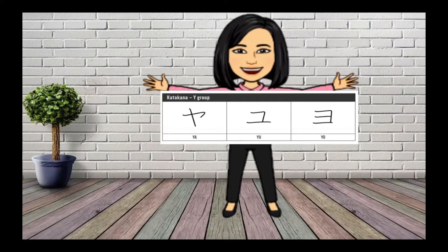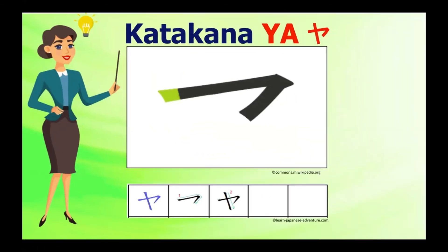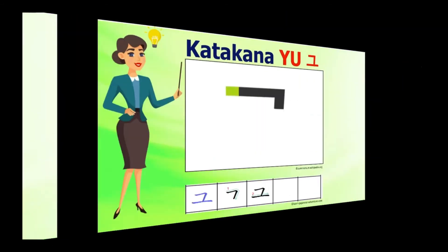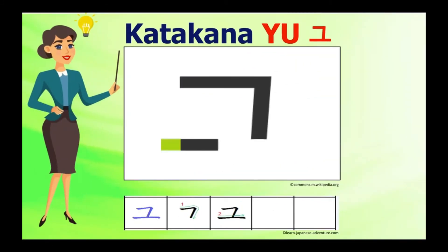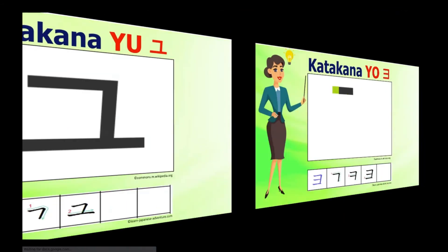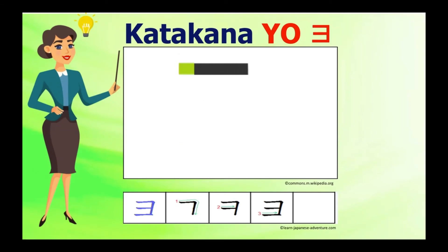Next is the katakana Y group: ya-yu-yo. There are no available characters for yi and ye because they sound similarly to vowels i and e. Katakana Ya is very easy to remember since it looks like the letter Y of the Roman alphabet. Katakana Yu looks like a capital letter E of the Roman alphabet — very easy to remember.